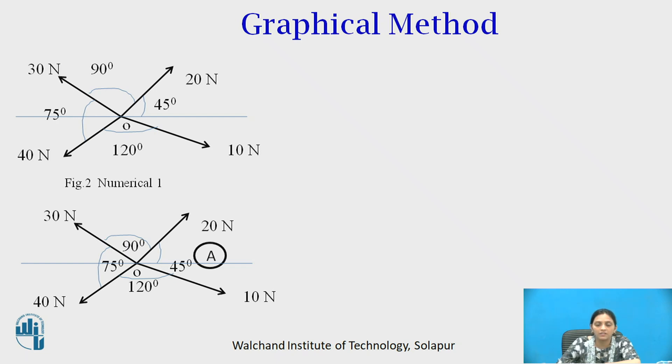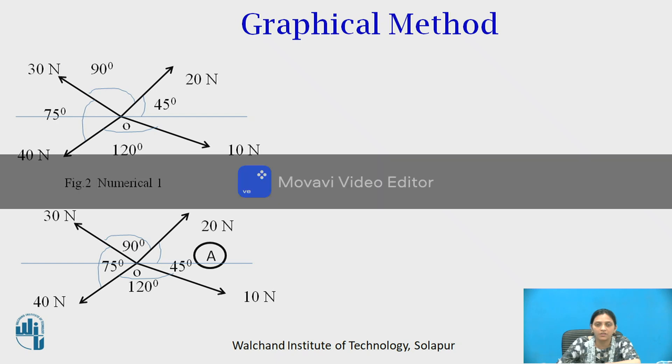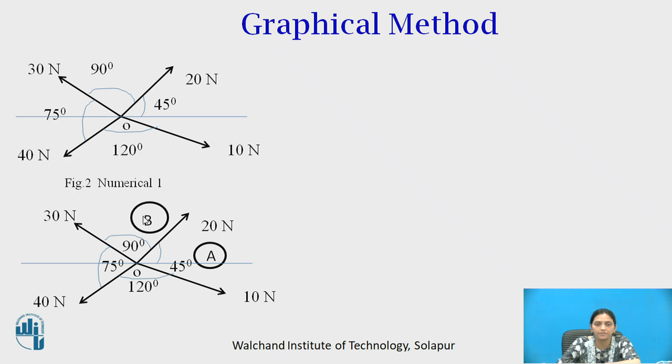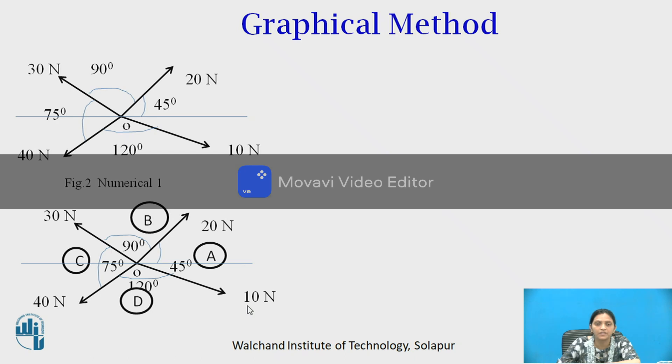For that, use Bow's notation. Bow's notation is always written in a circle. Then space between force 30 and 20 Newton, it is space B. Space between 30 Newton and 40 Newton is space C. And space between 40 Newton and 10 Newton is space D.